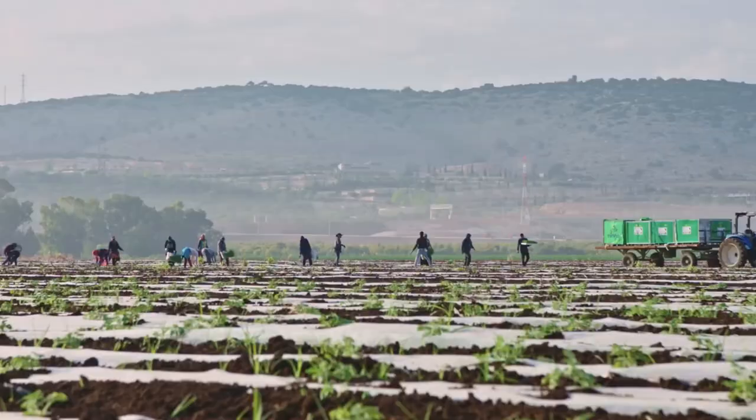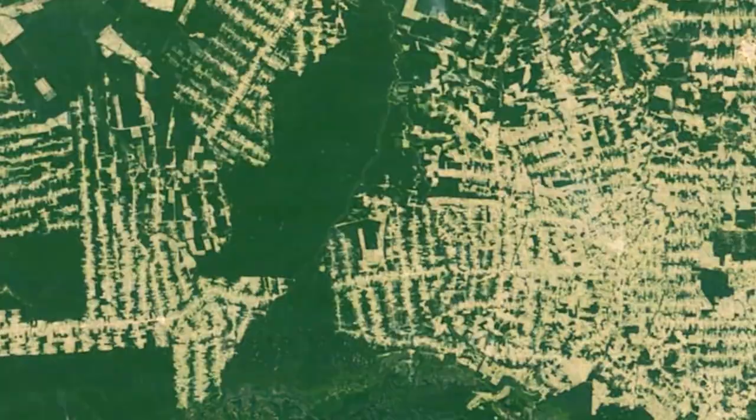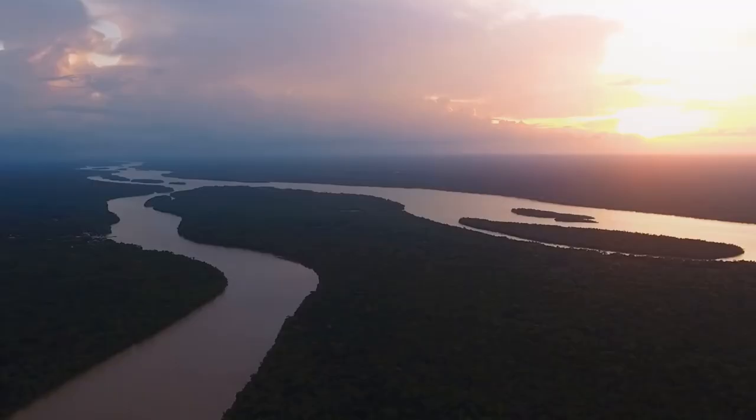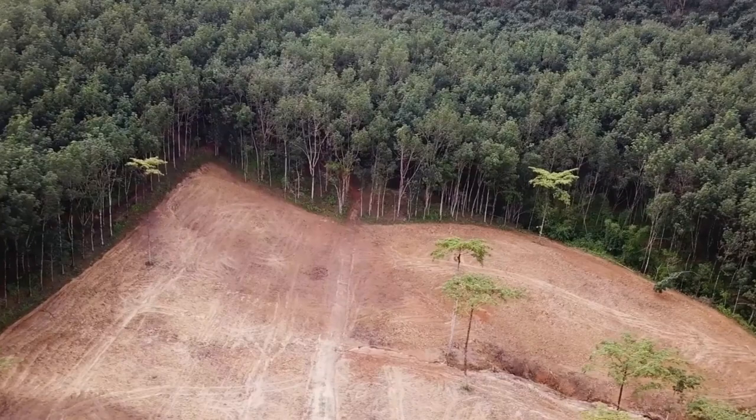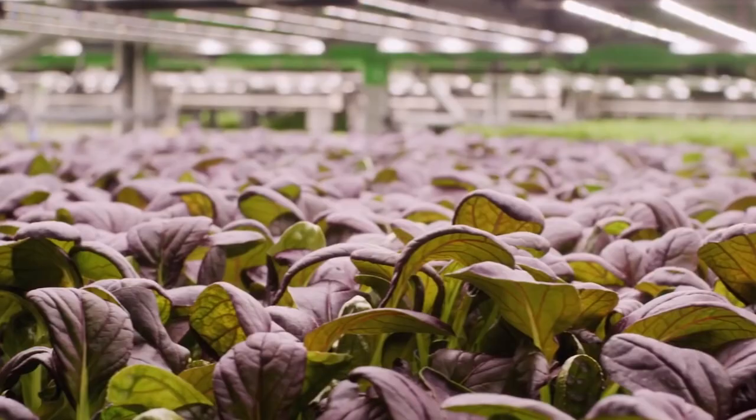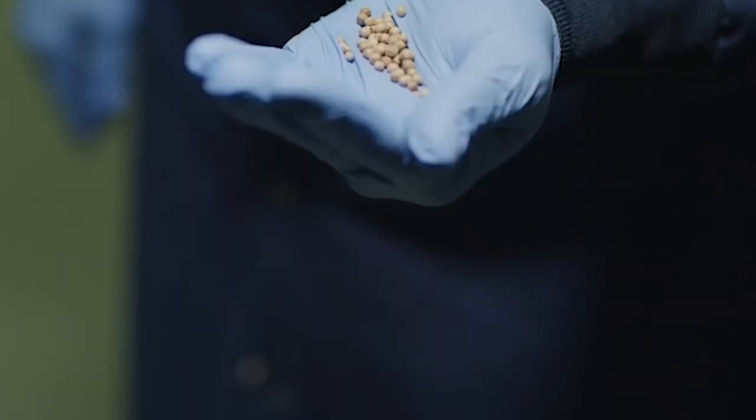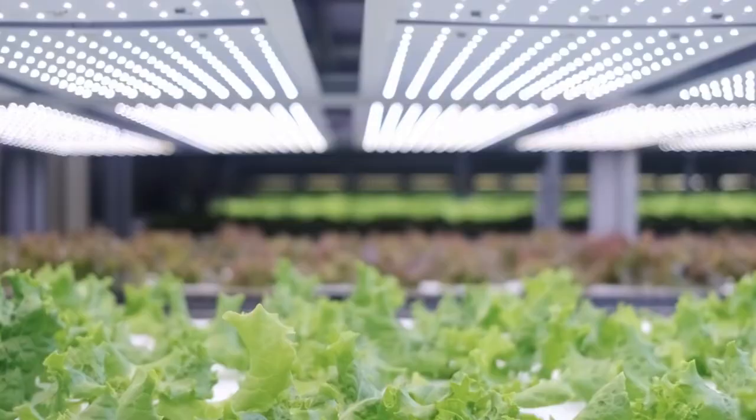In conclusion, the future of vertical farming is not without challenges, but it holds immense potential to revolutionize the way we produce and consume food. The recent failures of large venture-backed vertical farms have highlighted the need for more sustainable practices, crop diversification, and technological advancements. By learning from past mistakes and focusing on innovation, collaboration, and sustainability, the vertical farming industry can overcome its obstacles and establish itself as a viable and crucial component of the global food system. As technology continues to evolve, the dream of widespread vertical farming contributing to a more sustainable and food-secure world may become a reality.